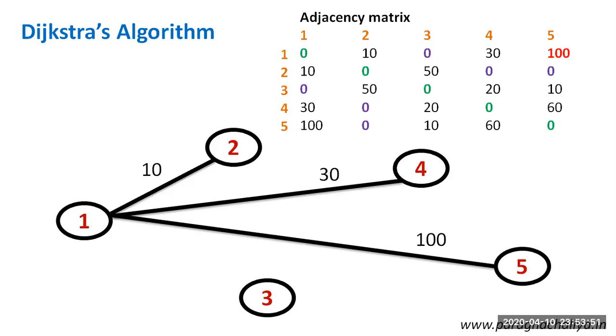In the same way, we will do the same process for remaining nodes. 2 to 1 which is already there. 2 to 2 is 0, 2 to 3 is 50, so it is like this. 2 to 4 is 0, 2 to 5 is 0. So there will not be any edge between 2 to 4 and 2 to 5.